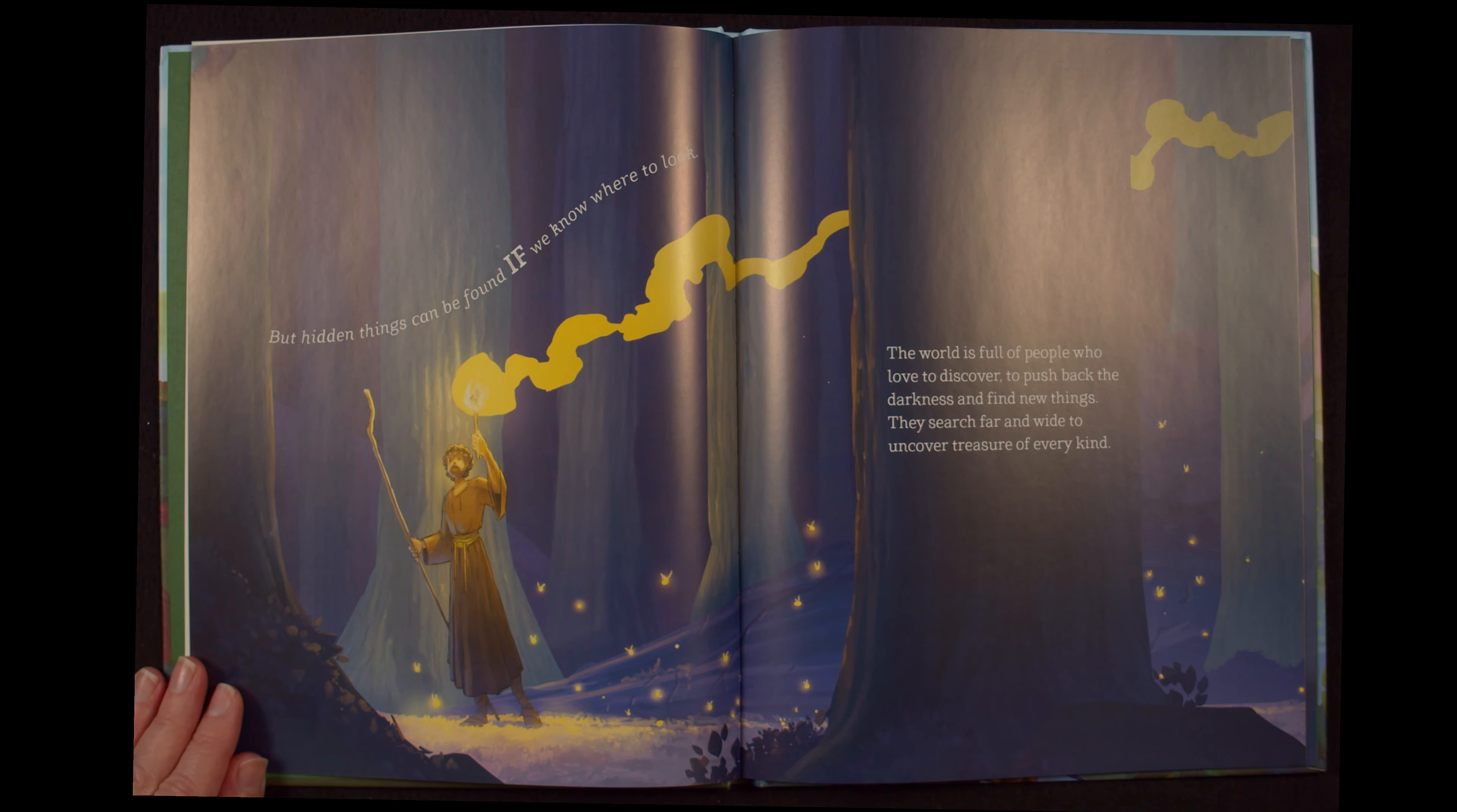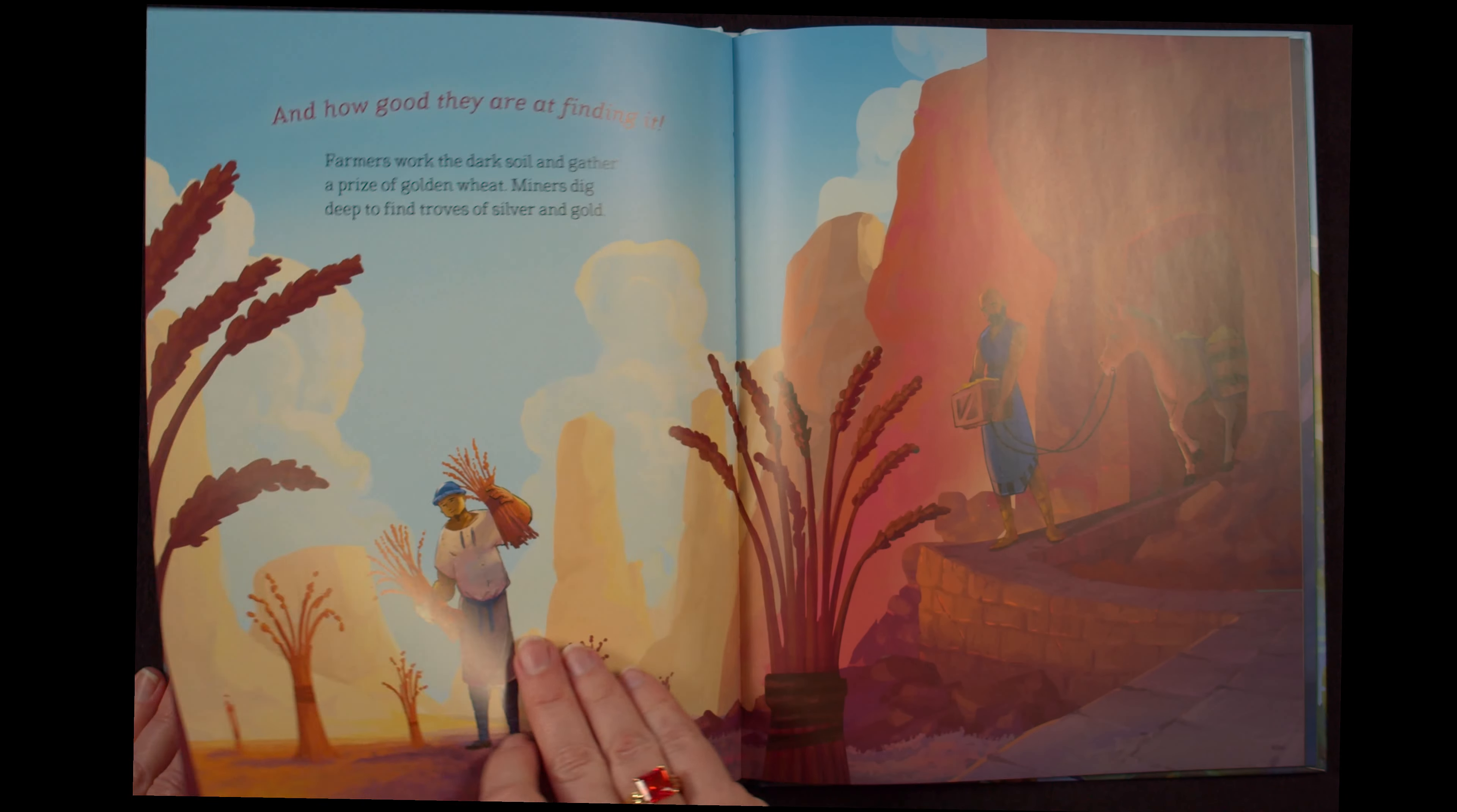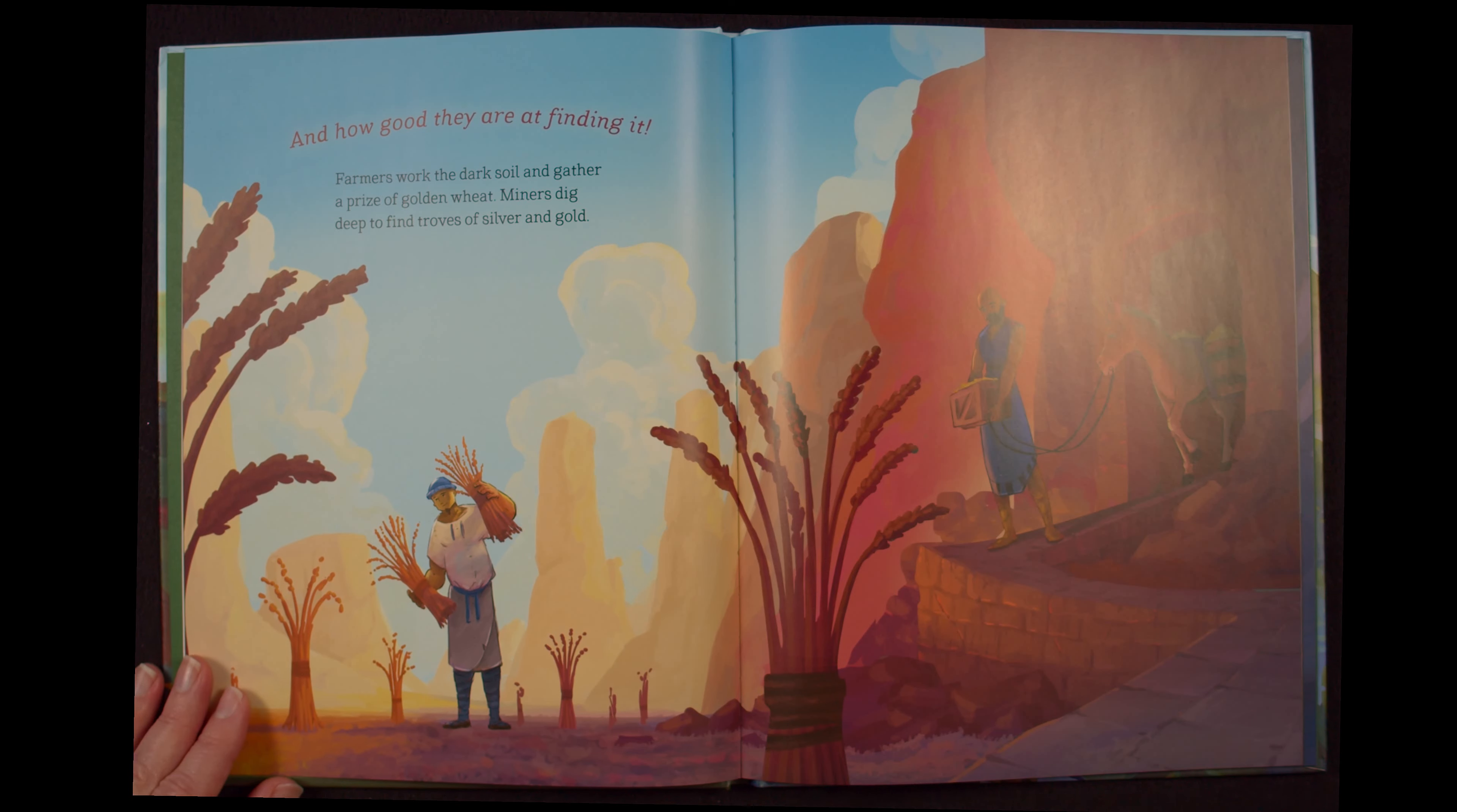But hidden things can be found if we know where to look. The world is full of people who love to discover, to push back the darkness and find new things. They search far and wide to uncover treasure of every kind. And how good they are at finding it. Farmers work the dark soil and gather a prize of golden wheat. Miners dig deep to find troves of silver and gold.